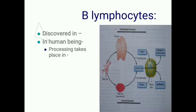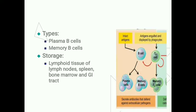For B lymphocytes, pre-processing takes place in the liver and bone marrow. There are only two varieties: plasma B cells and memory B cells. They are also stored in the lymphoid tissues of lymph nodes, spleen, bone marrow, and digestive tract.